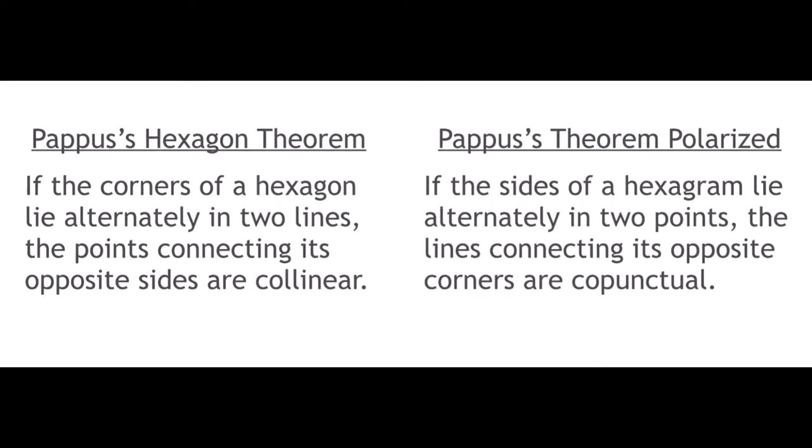If the sides, not the corners, lie alternately into points, the lines connecting opposite corners are co-punctual, that is, concurrent.